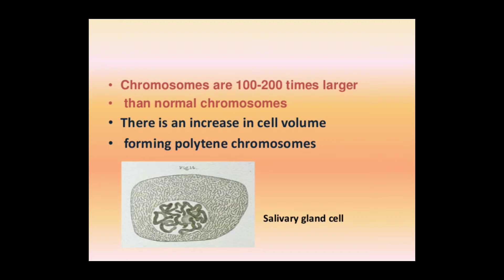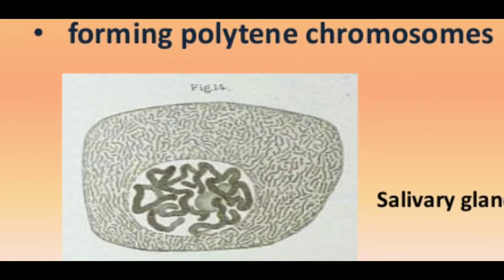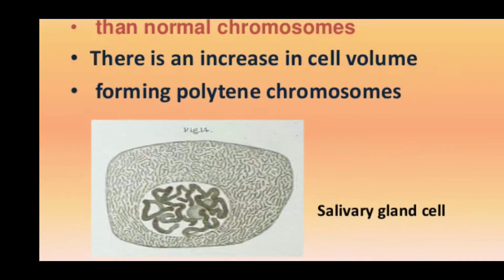There is an increase in cell volume, forming polytene chromosomes. And they are called polytene chromosomes. Salivary gland chromosomes are very big.